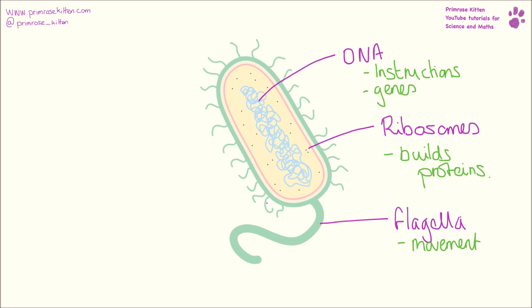The little furry bits on the outside — these are the pili. They are responsible for helping the bacteria stick to things, so they're responsible for attachments. If you want your bacteria to stick to other cells or surfaces like your teeth, your intestines, or rocks, then the pili is the bit that's actually responsible for doing that.